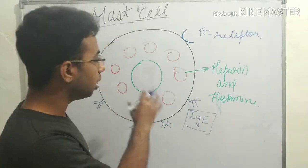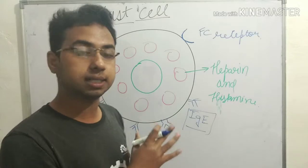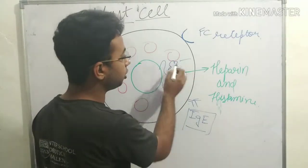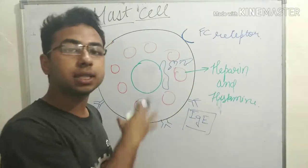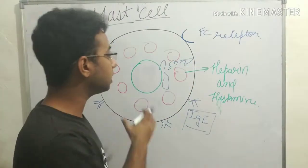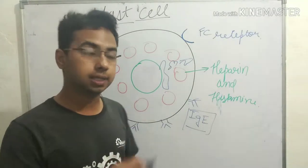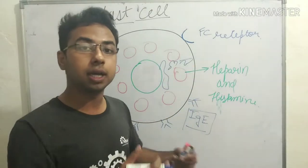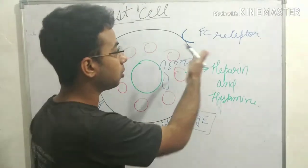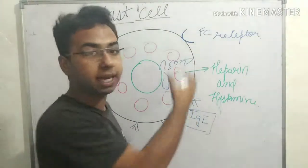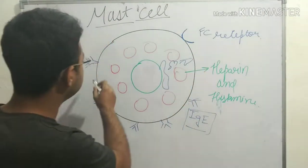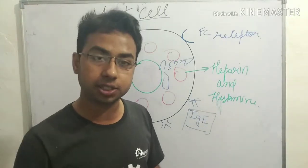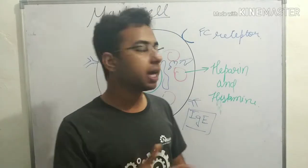Mast cells also contain the endoplasmic reticulum near the nucleus, the Golgi apparatus, mitochondria, and other organelles. In terms of immune components, the FC receptors, IgE antibody, heparin, and histamine play key roles in the inflammatory reactions of mast cells.